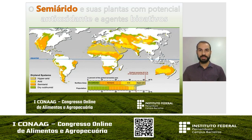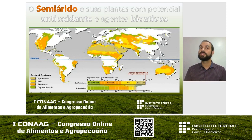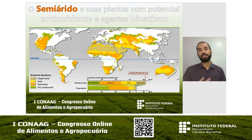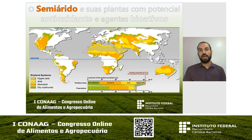Grande parte do nosso planeta é de regiões áridas e semiáridas. Quer dizer que nessas regiões não existe produção? Não. Nos Estados Unidos, o principal celeiro produtivo é uma região semiárida — a Califórnia, a Flórida, são regiões semiáridas e lá acontece a maior parte da produção. No Oriente Médio, Israel é uma região árida, grande parte de deserto, e lá existe uma grande produção agrícola.